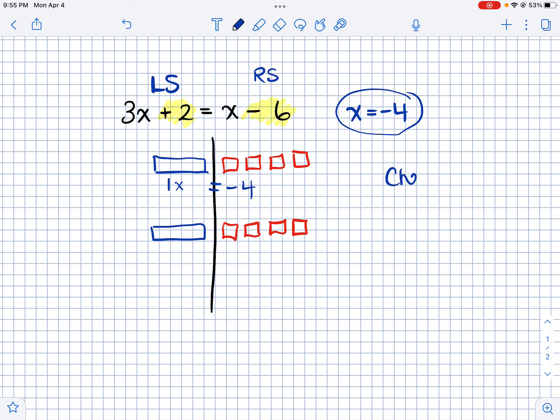And I can even test that out. My left side of the equation is three x plus two. So if x equals negative four, let's sub that in. I would get negative twelve plus two, which is negative ten. Let's check the right side. The right side is x minus six. So if x is negative four minus six, negative four take away six is negative ten. So the left side equals the right side. So therefore I solved this correctly.